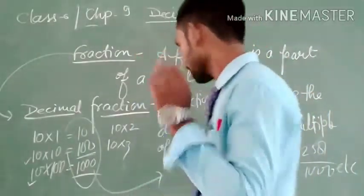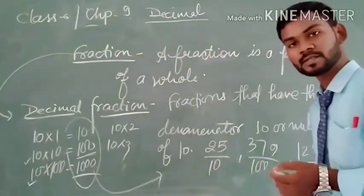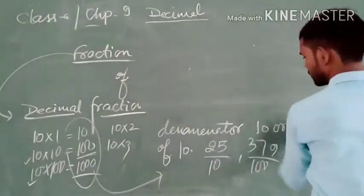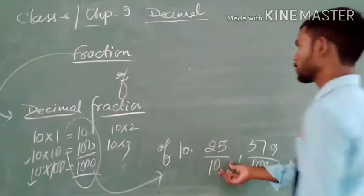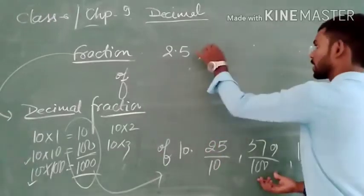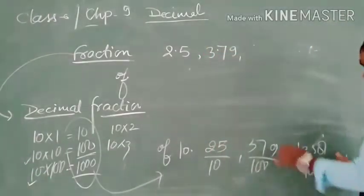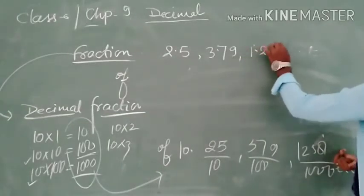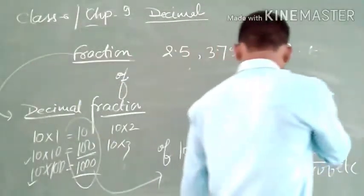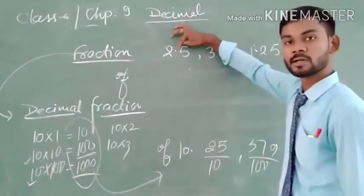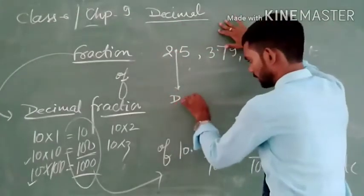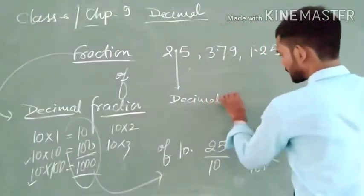These decimal fractions can also be expressed as decimal numbers. 25 upon 10 can also be expressed as 2.5; 37 upon 100 can be expressed as 3.79; and 1,258 upon 1,000 can be written as 1.258. Here, the dot is called the decimal point, and this is the decimal number — we read 2.5 as 'two point five'.